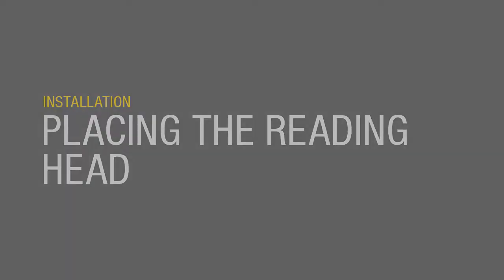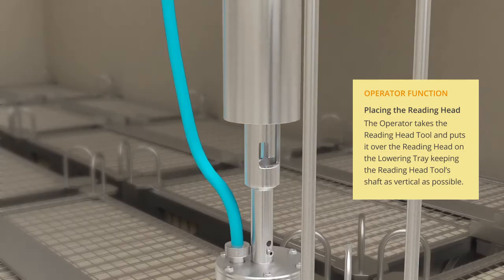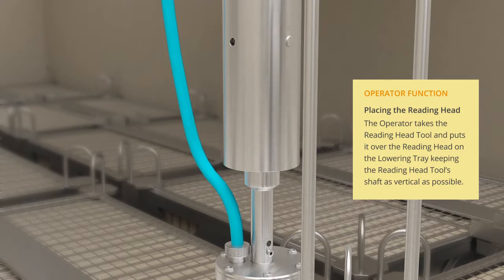Applying the reading head. The operator takes the reading head tool and puts it over the reading head on the lowering tray, keeping the reading head tool's shaft as vertical as possible.